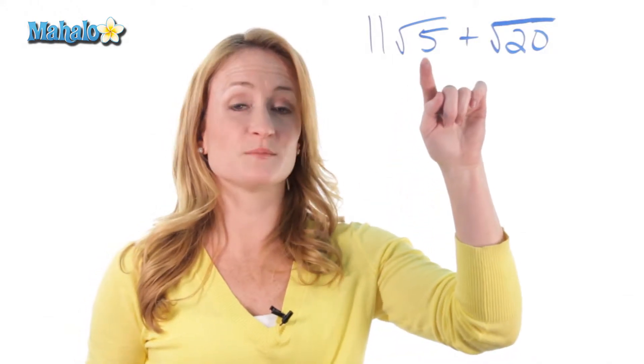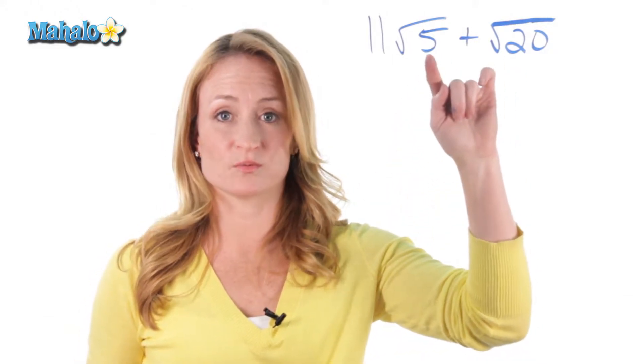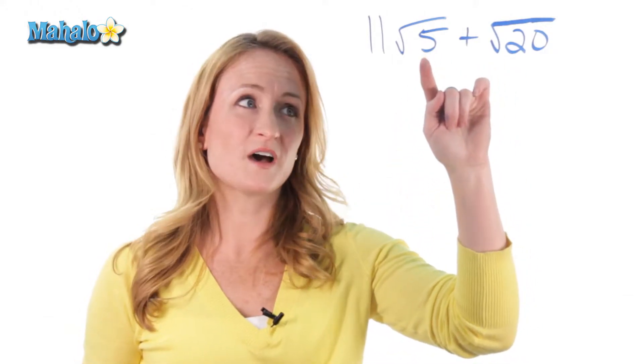Looks a little nasty, but it's not as intimidating as it looks. In fact, don't skip these problems in your homework because it's actually quite simple. Remember the rule is, in order to add two radicals together, they need to have the same number inside the root.